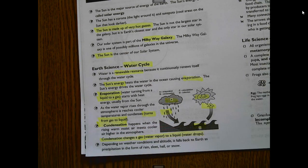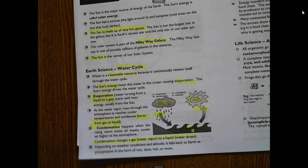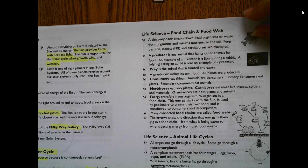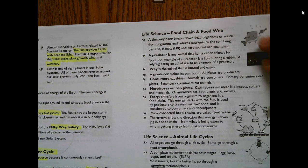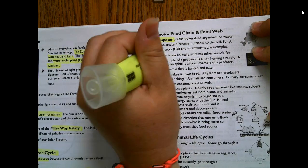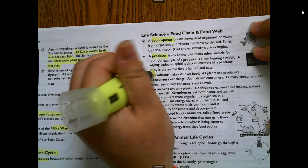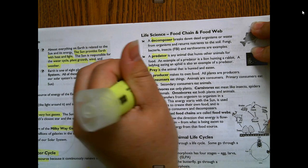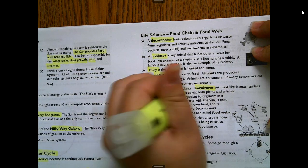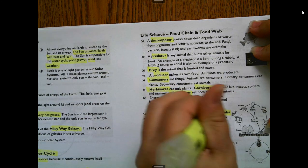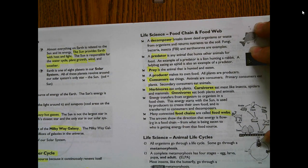Food chain and food web vocabulary: decomposers, predator, prey, producers, consumer, herbivore, carnivore, omnivore, food chain, food web. Students need to know all of that.